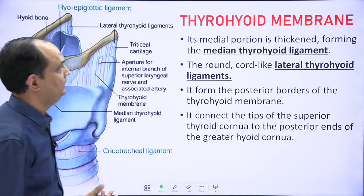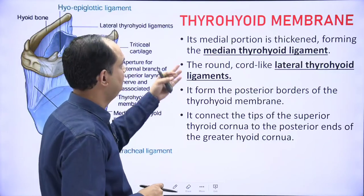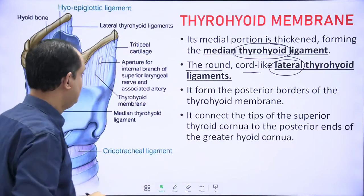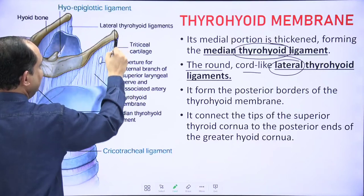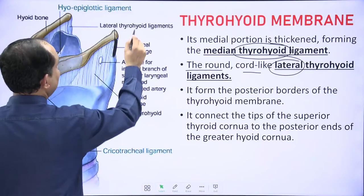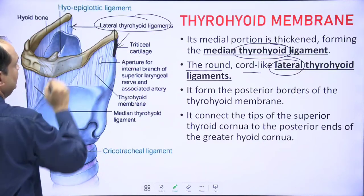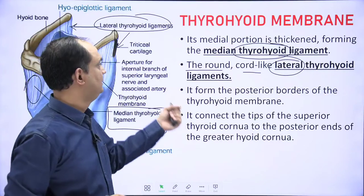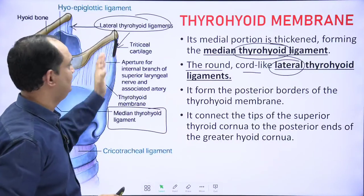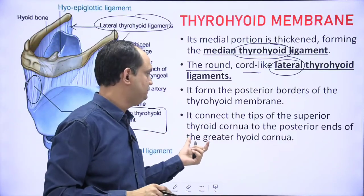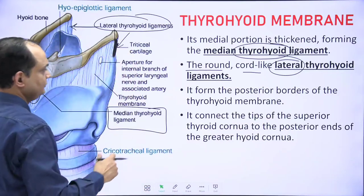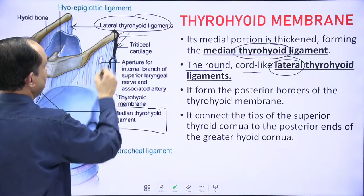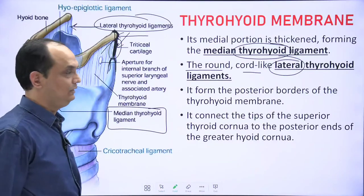Regarding the thyrohyoid ligaments: the median portion is thickened and forms the median thyrohyoid ligament, and a round cord-like lateral thyrohyoid ligament is also present. The lateral thyrohyoid ligament forms the posterior border of the thyrohyoid membrane and connects the tip of the superior thyroid cornu to the posterior end of the greater horn of the hyoid bone.